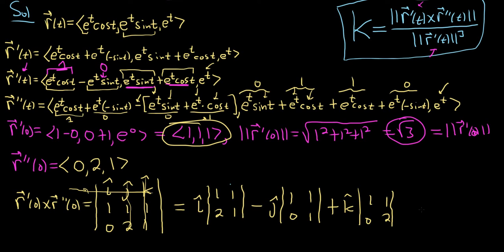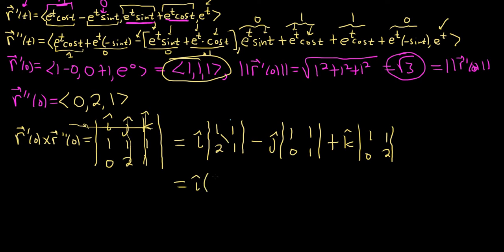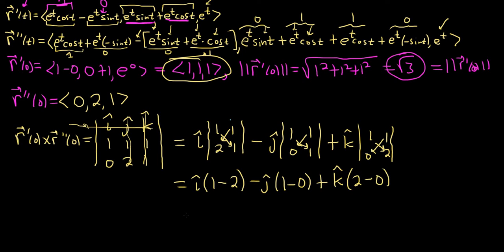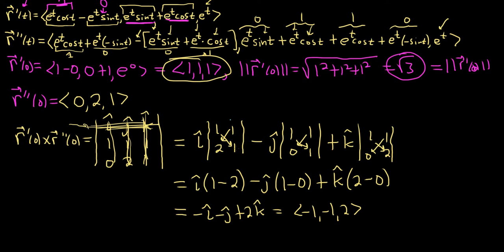Computing: i hat gives 1 times 1 minus 1 times 2 = 1 minus 2 = negative 1. Minus j hat gives 1 times 1 minus 1 times 0 = 1 minus 0 = 1, but with the negative sign it becomes negative 1. Plus k hat gives 1 times 2 minus 1 times 0 = 2 minus 0 = 2. So the cross product is negative i hat minus j hat plus 2k hat, or in component form: negative 1, negative 1, 2.